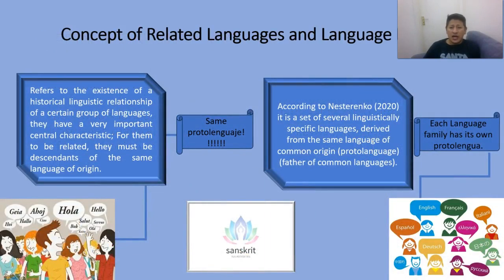Related languages and language family. This refers to the existence of a historic linguistic relationship of a certain group of languages. They have a very important central characteristic: to be related, they must be descendants of the same language of origin. We can call this many languages, for example German, English, even some Italian and Spanish, coming from a proto-language.